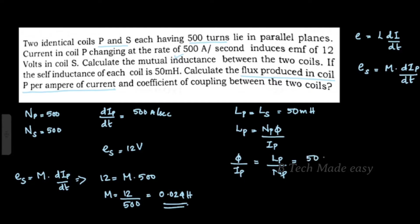We substitute LP as 50 into 10 raised to minus 3 Henry, divided by NP which is 500. This gives flux per Ampere of current equal to 1 into 10 raised to minus 4 Weber per Ampere.